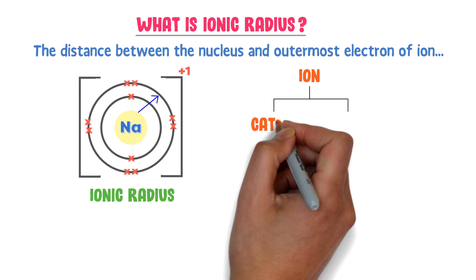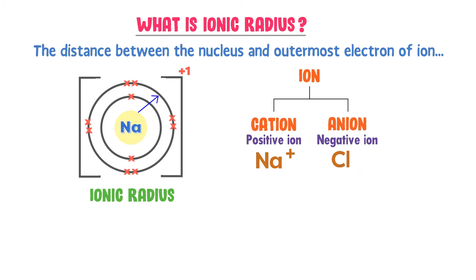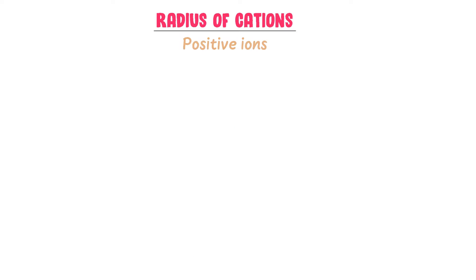An ion may be either a cation or an anion. A cation is a positive ion — for example, the sodium ion. An anion is a negative ion — for example, the chloride ion. Remember that metals form positive ions and non-metals form negative ions. Now let me teach you the concept of radius of cations, or positive ions.